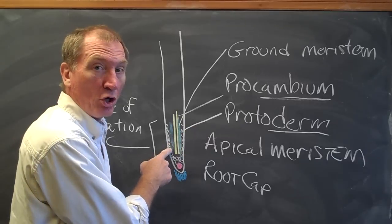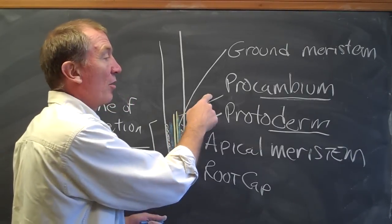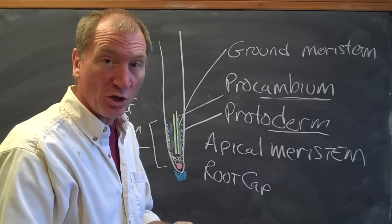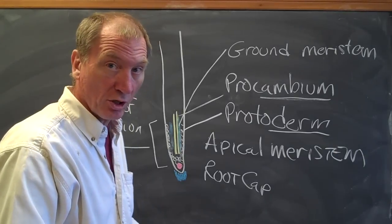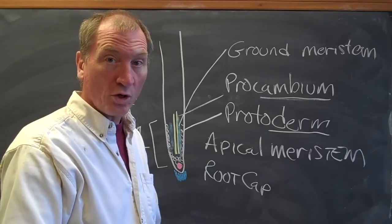So the zone of elongation has three types of juvenile cells. It has protoderm, which becomes the epidermis once it matures. The procambium, which become the vascular tissues once they mature. And the ground meristem, which becomes the cortex tissues.